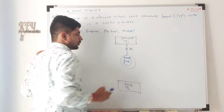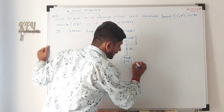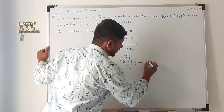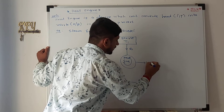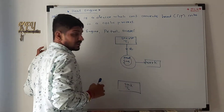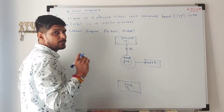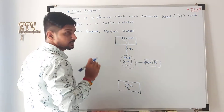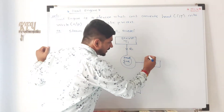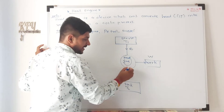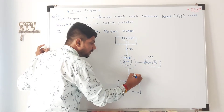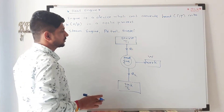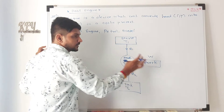Part of the heat will be converted as work. And we know, according to the second law of thermodynamics, no engine in this world can have 100% efficiency — meaning total heat can never be converted into work. Hence, the remaining amount of heat will be given out through the sink, that is Q2. So we have: source, sink, and work.